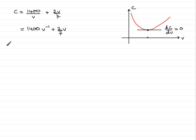So we're now ready to differentiate this. So in the usual way, dc/dv, all we do is multiply by minus 1, so it's minus 1400. Take one away from the power, so that's V to the minus 2. And for two-sevenths V, when you differentiate that with respect to V, it's just two-sevenths.